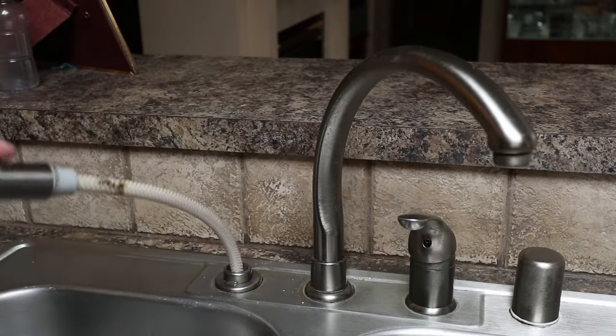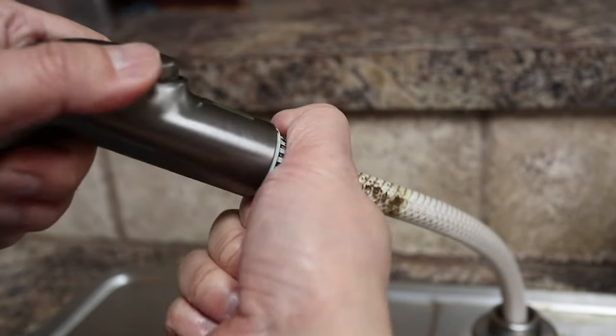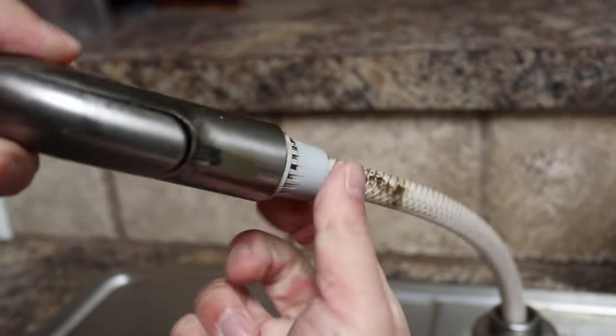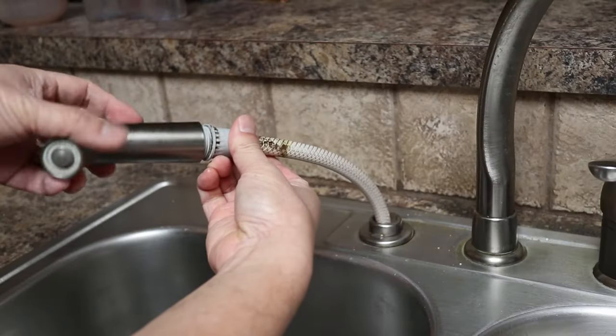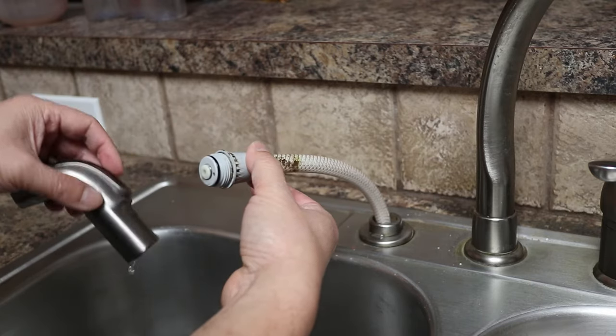With this sprayer I need to separate it from the collar. It should just twist off but if it's stuck you might need a wrench to help loosen it. And once it's off watch out for any residual water inside.